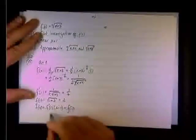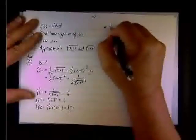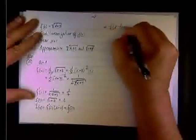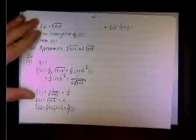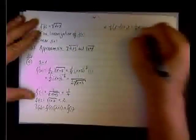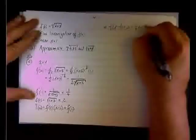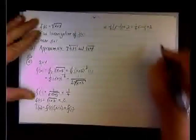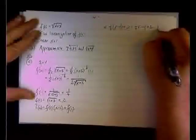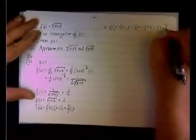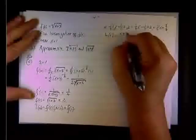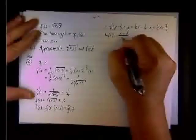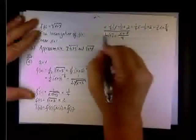So L of x equals f prime is 1/4 times (x minus 1) plus f of 1 is 2. So we have 1/4 x minus 1/4 plus 2. 2 is 8 over 4, so we end up having 1/4 x plus 7/4, or we can put it in a common denominator, and we'll end up having (x plus 7) over 4. So this is the result of the linearization.